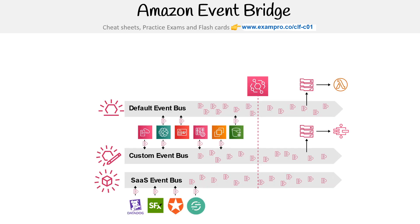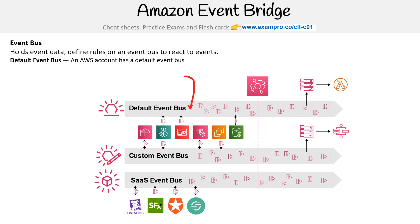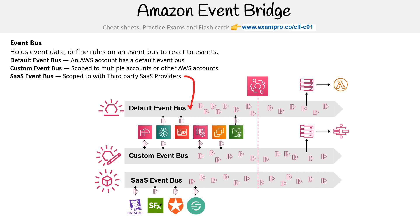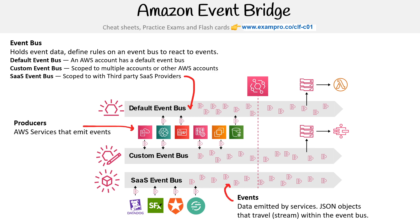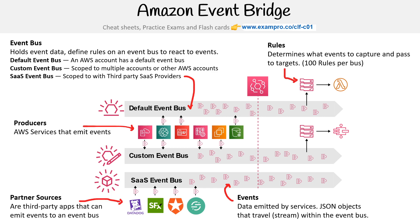Amazon EventBridge defines an event bus that holds event data and defines rules to react to events. You always get a default event bus for every AWS account. You can create custom event buses scoped to multiple accounts, and a SaaS event bus scoped to third-party SaaS providers. Producers are AWS services that emit events. Events are data emitted by services — they're JSON objects that travel within the event bus. Partner sources are third-party apps that can emit events to event buses. Rules determine what events to capture and pass to targets, and targets are AWS services that consume events.